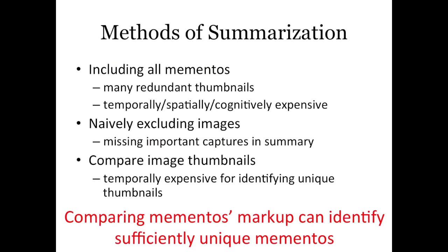There are a couple different methods of summarization you can use. You can include all the mementos — it's very expensive, temporally, spatially, and cognitively — to look at a collection of many different screenshots and get the gist of how it's changed. If you try to randomly pick mementos, you end up missing important captures representative of how the page has changed. Doing image differentials — comparing every single memento — is also very temporally expensive to generate.